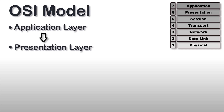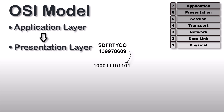Next to the application layer is the presentation layer. The presentation layer receives data from the application layer in the form of characters and numbers. It converts these characters and numbers into machine-understandable binary format of ones and zeros. This function of the presentation layer is called translation.